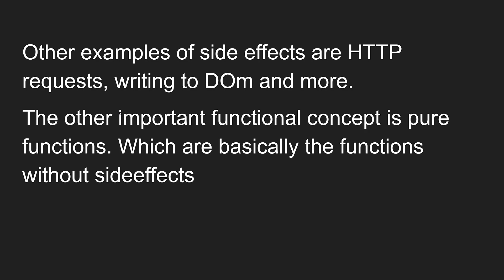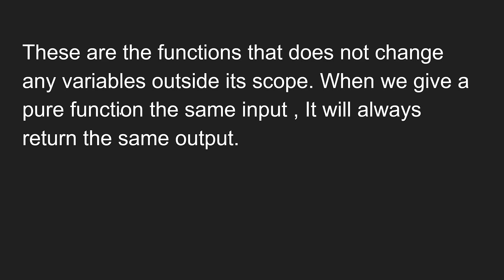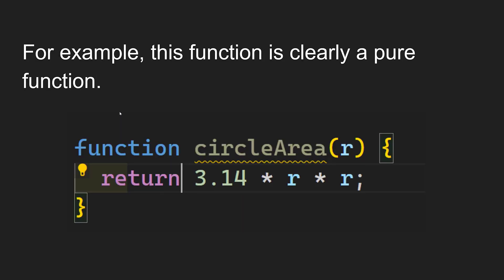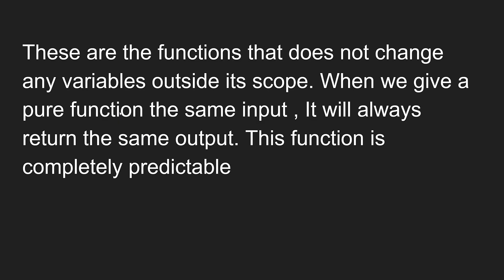The other important functional concept is pure functions, which are basically functions without side effects — they do not change any variables outside their scope. When we give a pure function the same input, it will always return the same output. For example, the 'circleArea' function here is a completely pure function. If we pass a radius of 20 at any instance, it will always return the same output. This function is completely predictable.